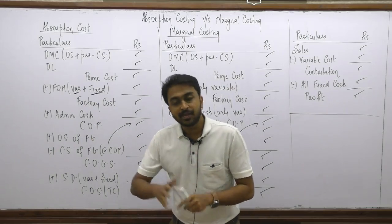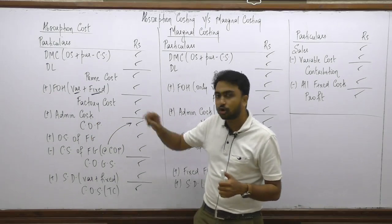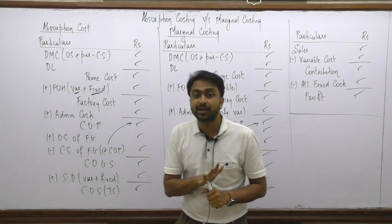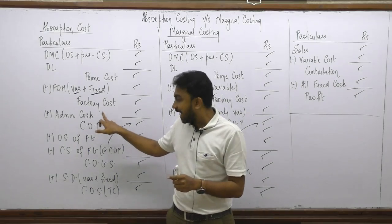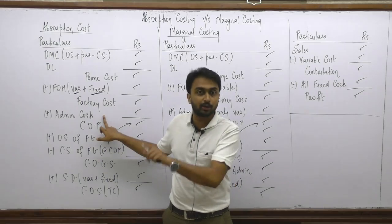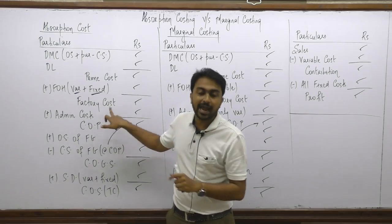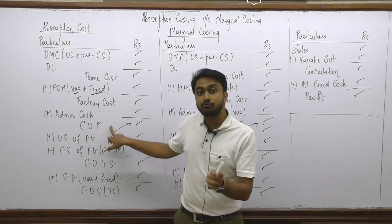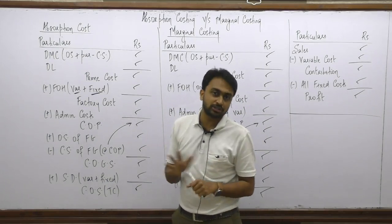If the question specifically mentions variable admin costs, we add both variable and fixed admin content to arrive at the cost of production. This is where costing differs from financial records: in financial records, admin cost goes directly to P&L and is not used to value closing stock. However, in costing records, admin cost is included in stock valuation because closing stock is valued at cost of production, and cost of production includes admin cost under costing.